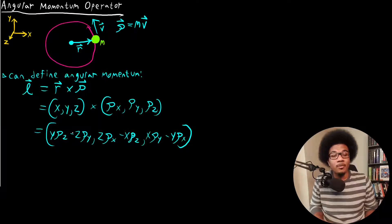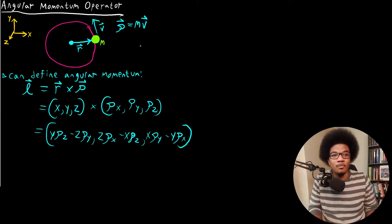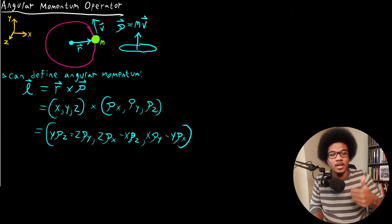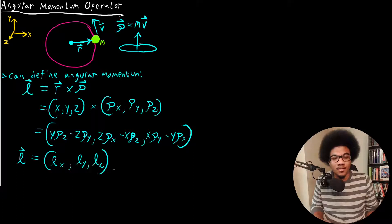Notice that for each component — if we think about the X component — it's dealing with position and momentum in all of the other planes. Because the angular momentum vector is going to bisect the circular motion. So if this is our circle, then the angular momentum vector is going to shoot straight up. If the particle is traveling in the Y and Z direction, angular momentum is going to be in the X direction. Same thing with each of the other two-dimensional components. So each of these is going to be a different component of the angular momentum: in the X direction, the Y direction, and the Z direction.